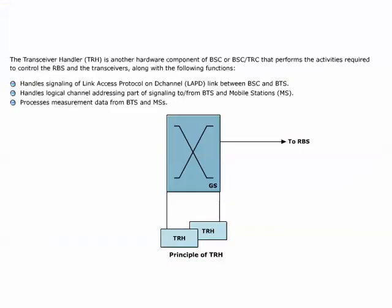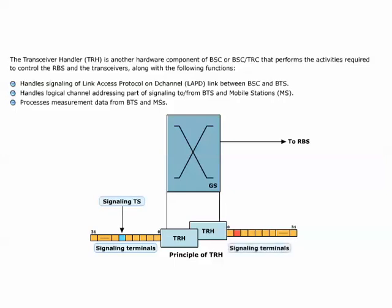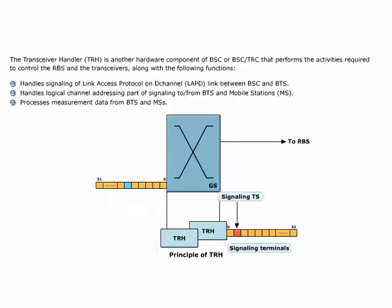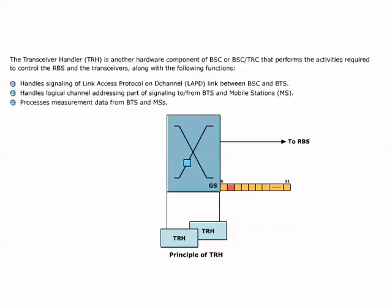The transceiver handler, TRH, performs the activities required to control the RBS and the transceivers, and is responsible for a multitude of functions, including handling of signaling on the link access protocol on D channel, LAPD link, between BSC and BTS, handling of logical channel addressing, part of signaling to or from BTS and mobile stations, and processing of measurement data from BTS and MS.